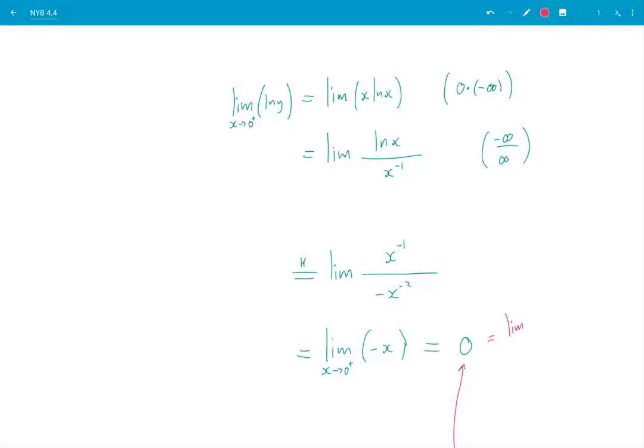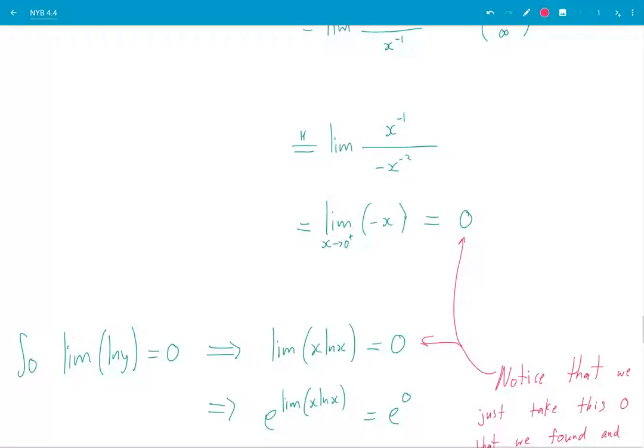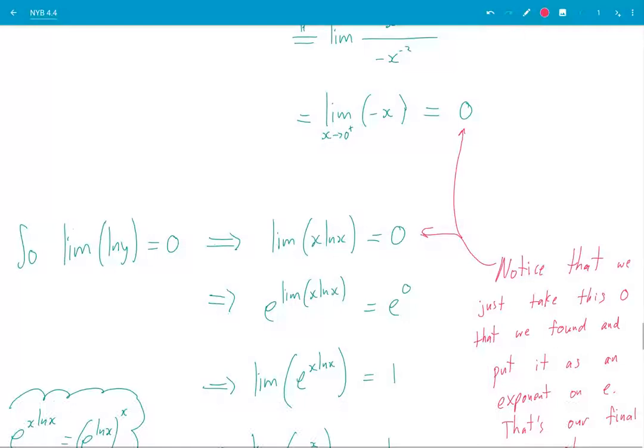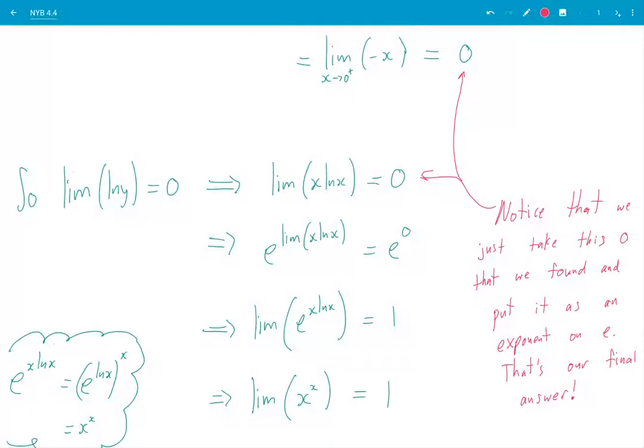Okay, so I'm not done yet. Pause and copy if you want. I found a limit of ln y. Okay, that's not, that is not what I want. I want a limit of y itself. So I do a rather lengthy calculation here. So this 0 here, so I'm pausing copy, sorry. This 0 here tells me that the limit of ln y is 0. And so limit of x ln x is 0.